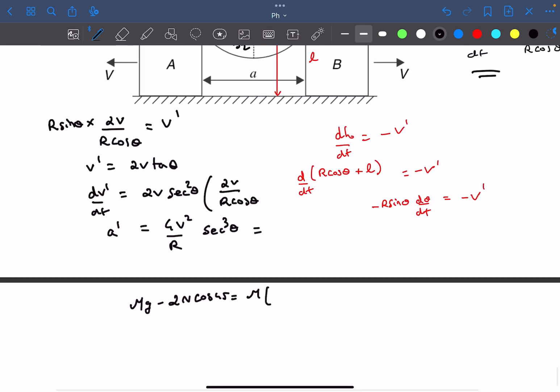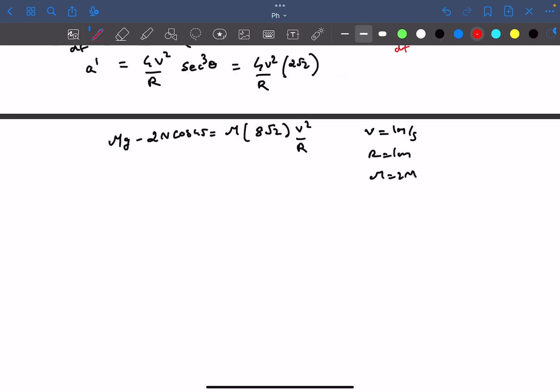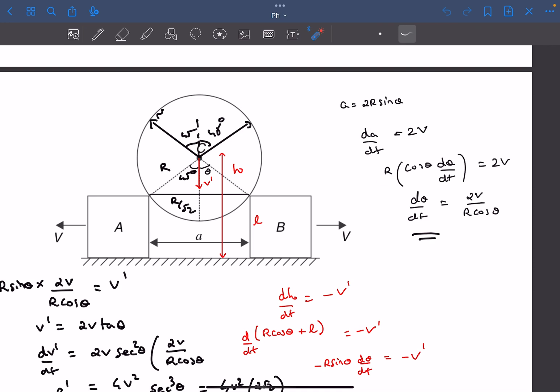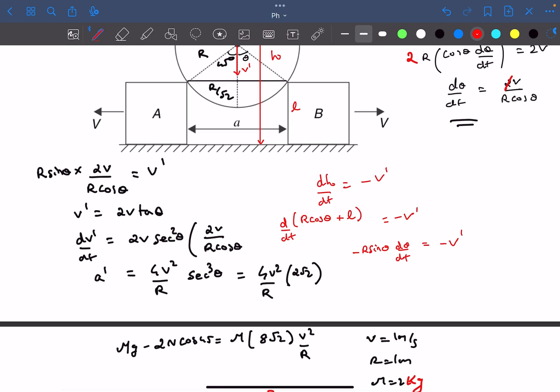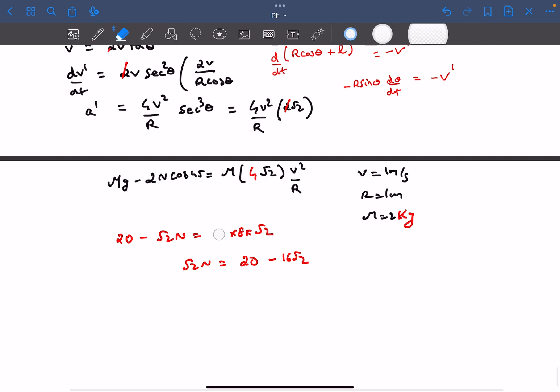Now substituting all the given values, I made a mistake here. This was 2R actually. I forgot to take the 2 outside, so d theta by dt would be V upon R cos theta. So the acceleration would be 4. So this 2 will be gone now. So our normal reaction will finally come out to be 10 root 2 minus 8 N.